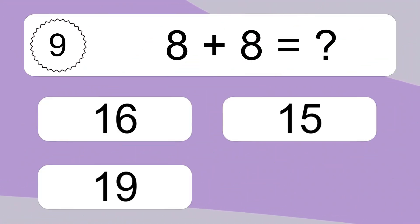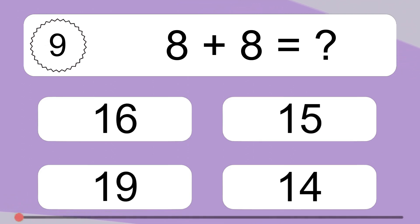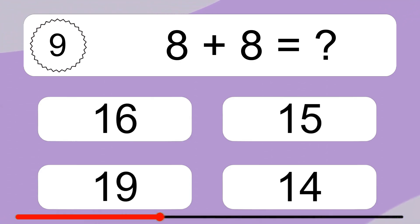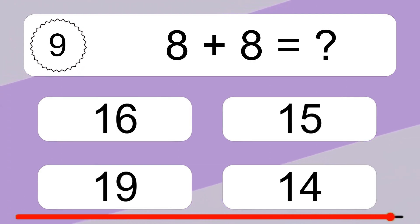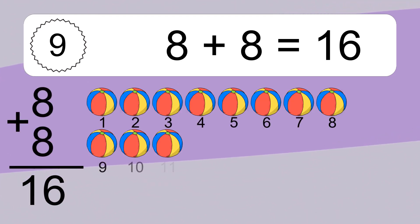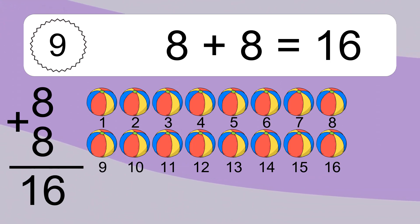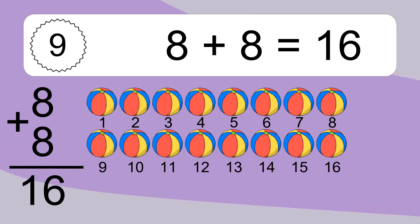Eight plus eight equals what? Eight plus eight equals sixteen. Let's count it: one, two, three, four, five, six, seven, eight, nine, ten, eleven, twelve, thirteen, fourteen, fifteen, sixteen.